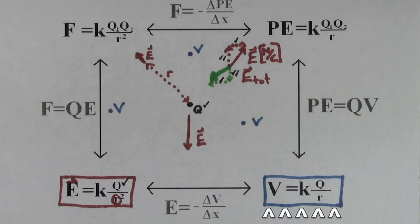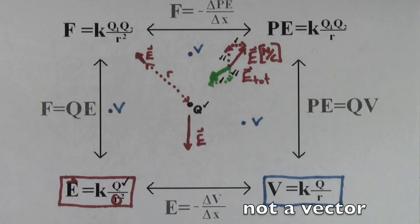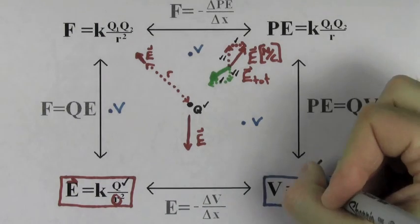You can use the formula KQ over R to determine the electric potential created by a point charge. Q is the charge creating the electric potential, and R is the distance from the charge to the point in space where you're determining the electric potential. Using this formula is much easier than using the electric field formula because the electric potential is not a vector — it has no direction and no components.